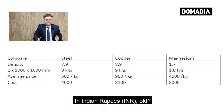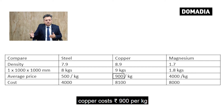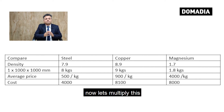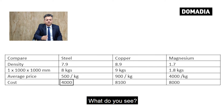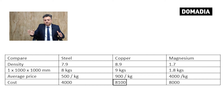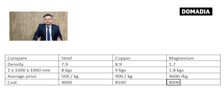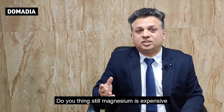Let's put a price in Indian rupees. Steel costs 500 rupees per kilo, copper costs 900 rupees per kilo, and magnesium costs around 3,500 to 4,000 rupees per kilo. Now let's multiply this by the weight of the same sheet. The price of steel is 4,000 rupees and copper is 8,100 rupees for one sheet of the same size. Do you see the magic in the numbers? Do you still think magnesium is expensive? It's not.